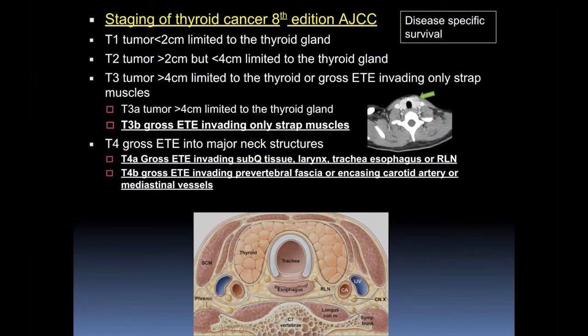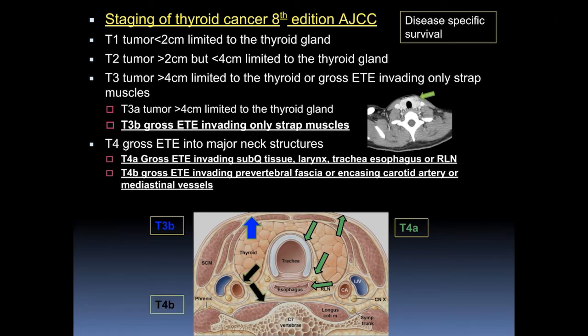Our current AJCC staging system breaks this down into T3B disease with gross invasion into the strap muscles, as opposed to T4A with invasion of the subcutaneous tissue, laryngotracheal complex, esophagus, or the recurrent laryngeal nerve. And T4B disease that involves the carotid artery, the prevertebral fascia, and mediastinal vasculature.